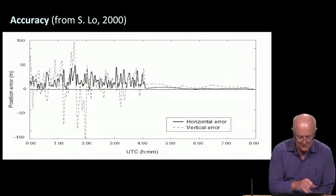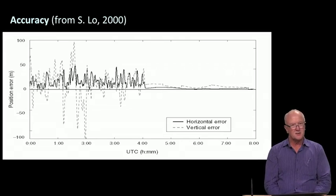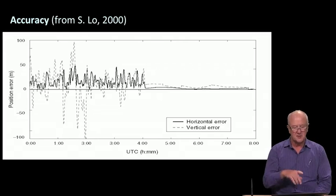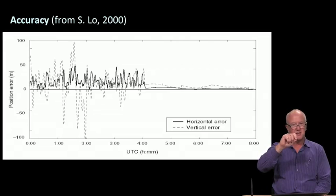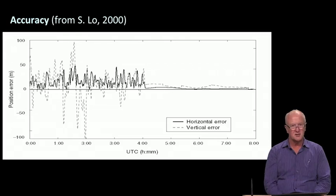The solid curve is the horizontal error. So the horizontal error is measured as the length of the vector from the true location to the estimated location. So it's always positive. The vertical error, being just one dimension, is just the error up or down away from the true location in the vertical. So the dashed curve can be both positive and negative, whereas the solid curve is always positive. Notice also that the dashed curve, the vertical errors, are larger than the horizontal errors.